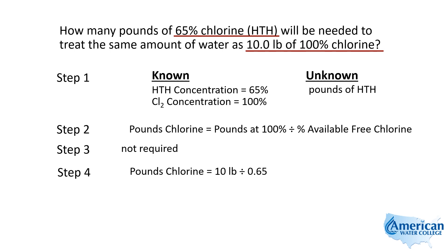Plugging in our numbers, we have 10 pounds of pure chlorine, but the chlorine that we're adding is only 65% pure. So we're adding it in the normal form, and 65% is equivalent to 0.65.